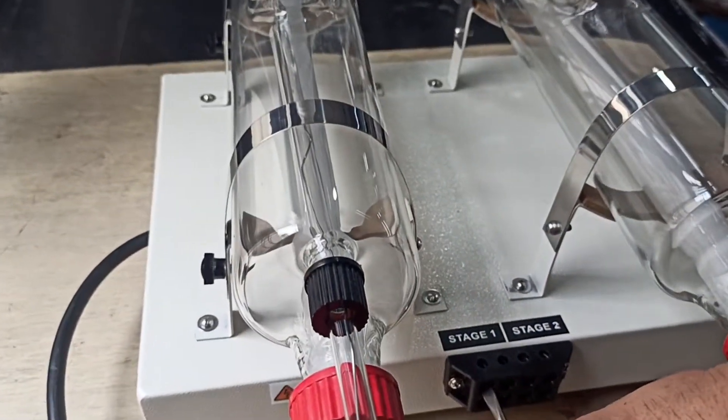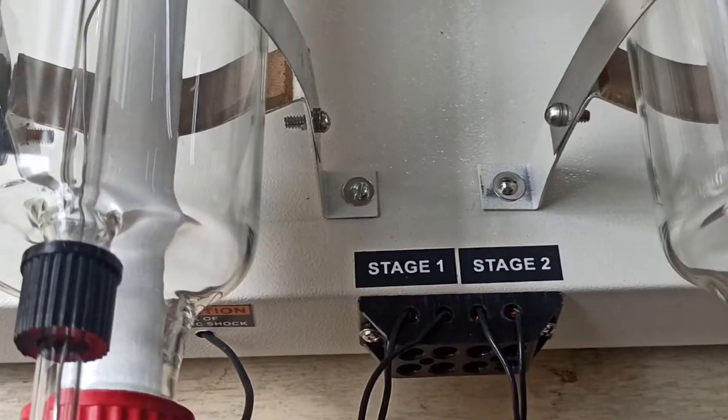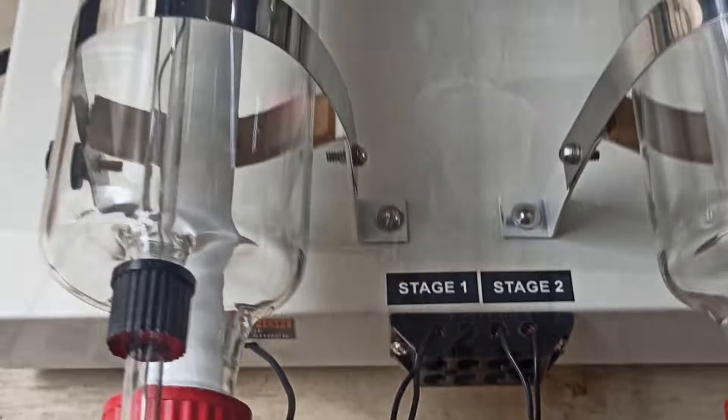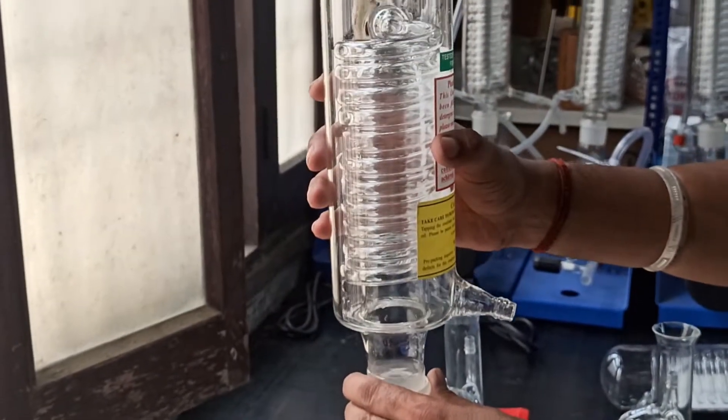Connect the heater wires on the given stage one and stage two points with a screwdriver. Now attach the condenser unit to both the boiling chambers.